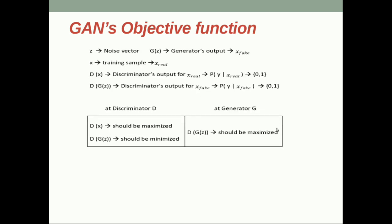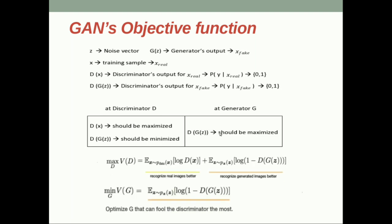Here's the notation: z is the noise vector, G(z) is the generator's output (the fake image), x_real is the training sample, D(x) is the discriminator output for the real image, and D(G(z)) is the discriminator output for the fake image. The discriminator wants to maximize D(x) and minimize D(G(z)), while the generator wants to maximize D(G(z)). This is captured in the minimax loss function. I'll skip deep coverage of GANs since I presume you already have some familiarity.